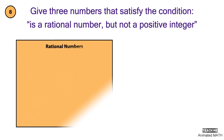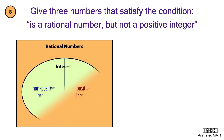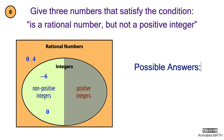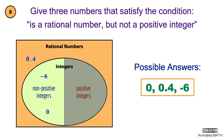Let's have a look at our Venn diagram for the set of rational numbers and integers. The condition is: it is a rational number, but not a positive integer. Any number within the colored part of our diagram is an answer. Possible answers are 0, 0.4, and negative 6.